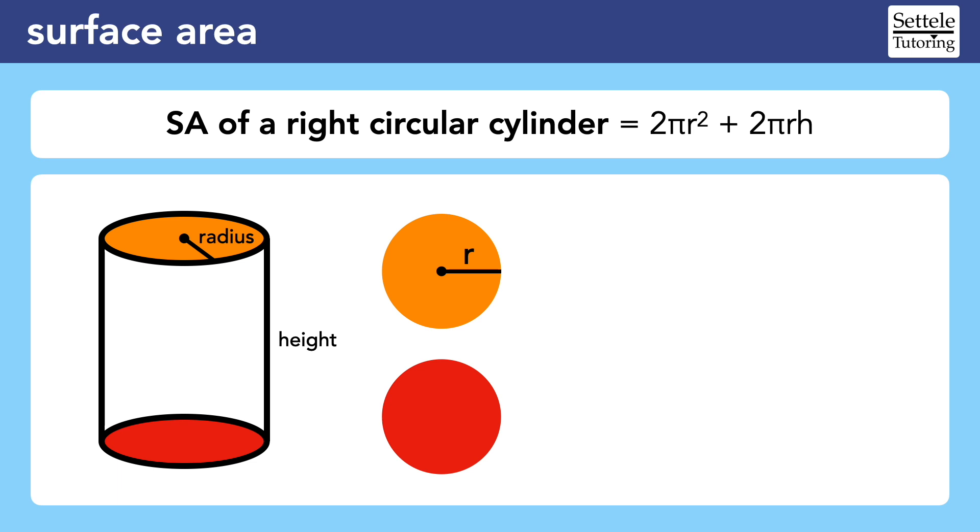The SAT reference chart reminds us that the area of a circle is pi times the radius squared, so it should be clear why the formula for surface area starts with 2πr². It's harder for people to visualize what's going on with the curved middle section of the cylinder, but it's actually quite simple.